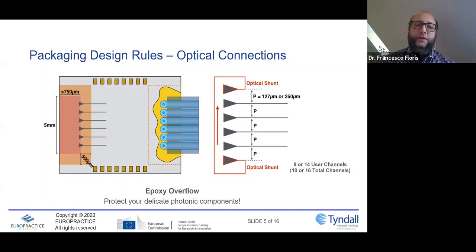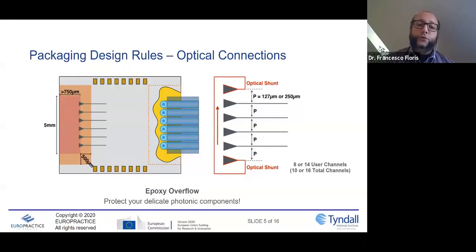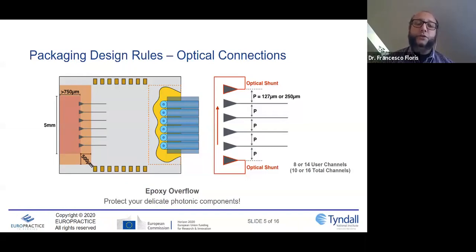The other fundamental aspect is the epoxy. The epoxy acts like a glue — we use it to fix and secure the fiber arrays with respect to the grating couplers or edge couplers. You can also use epoxy to protect your most delicate photonic components. But be careful: covering something might not always be the right choice. For example, if you glue a laser, the temperature could increase. So pay attention and be sure you are respecting a specific clear area all around your grating coupler or edge coupler arrays where we can spread the epoxy.